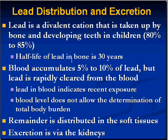Once lead gets into bone, the turnover rate is extremely slow — of all the lead in our bones right now, we'll still have half of it in 30 years. Blood accumulates 5% to 10% of lead, but lead is rapidly cleared from the blood. Lead has a distinct effect on the formation of red blood cells. Most of the lead not in bone or blood is distributed in soft tissues, and eventually it can be excreted by the kidneys.